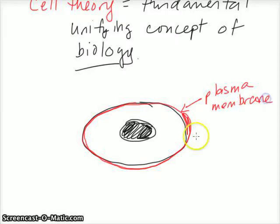What the plasma membrane does is it regulates what goes in and what comes out of the cell. In the center of the cell is the nucleus, and inside the nucleus is DNA.